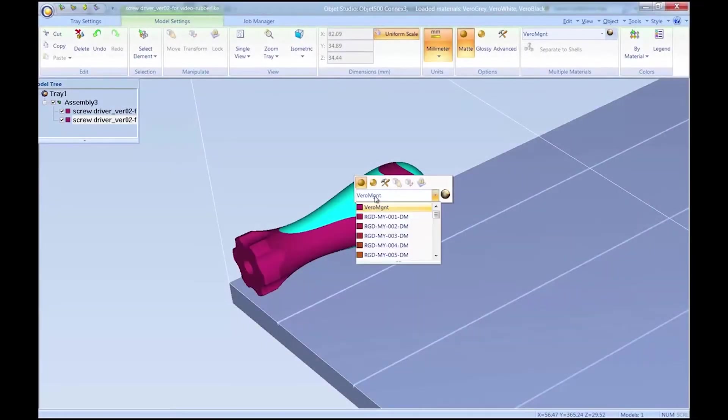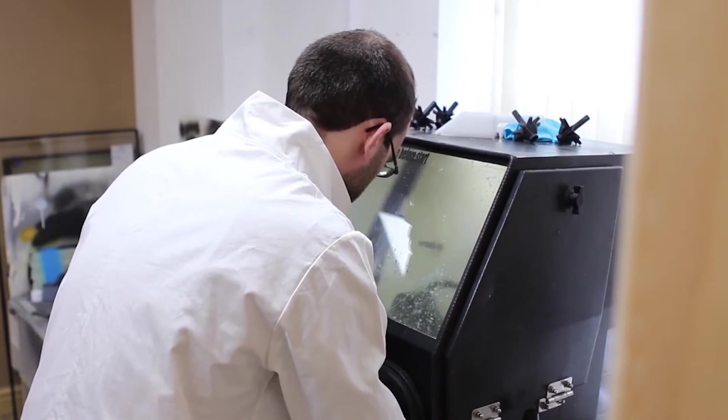The files are then imported into PolyJet's processing software, where the materials are assigned. The next step is to 3D print the part. When the job is complete, simply wash away the support material.